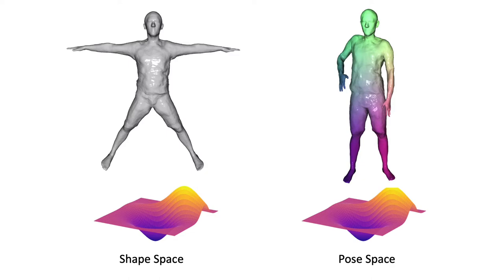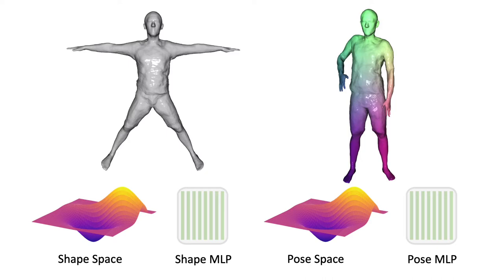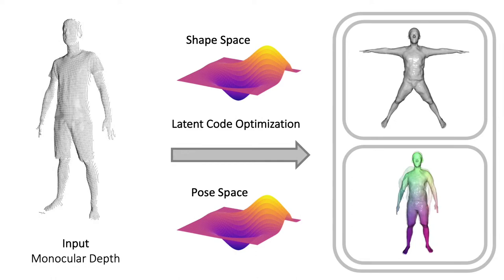In practice, our implicit shape and pose spaces are implemented as two separate multilayer perceptrons. Once learned, NPMs enable test-time optimization over learned spaces to fit new observations.